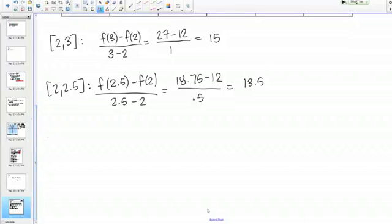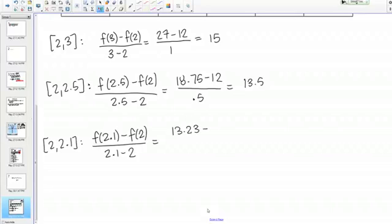Then we can do the interval from 2 to 2.1. That's f of 2.1 minus f of 2 over 2.1 minus 2. That's 13.23 minus 12 over 0.1, which is 12.3.